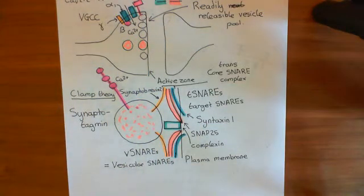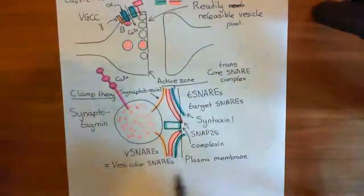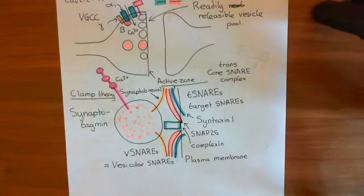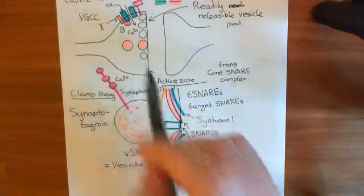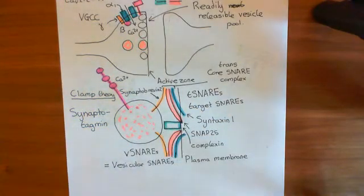So what was the point of this entire discussion? The point of this discussion was to tell you how important these snare complexes are in the release of neurotransmitter from axon terminals. Because this machinery is going to be what we target with botulinum neurotoxins.